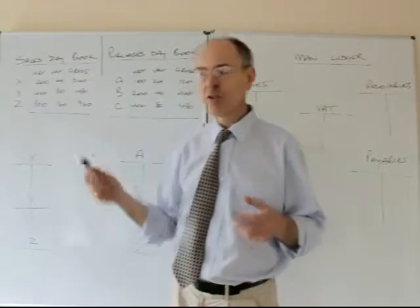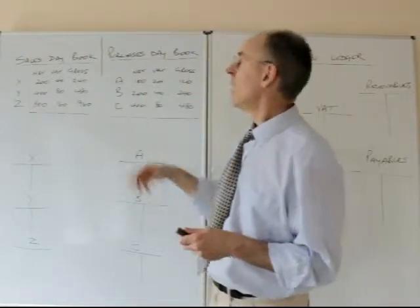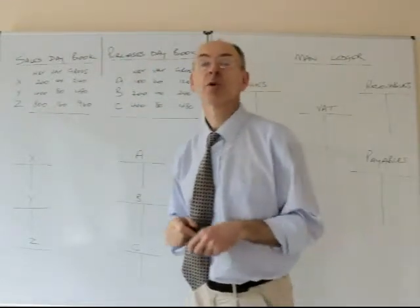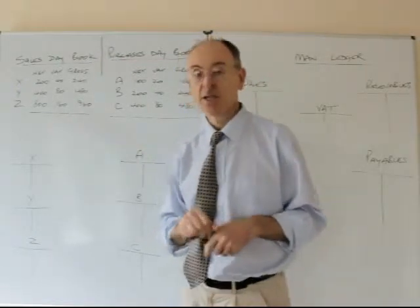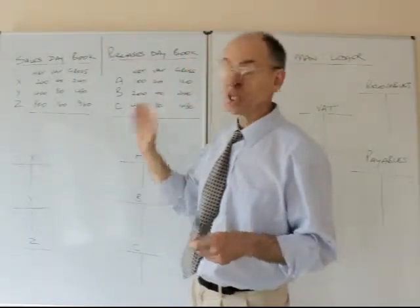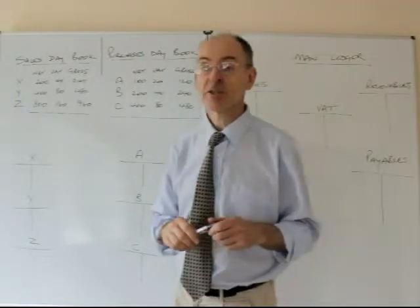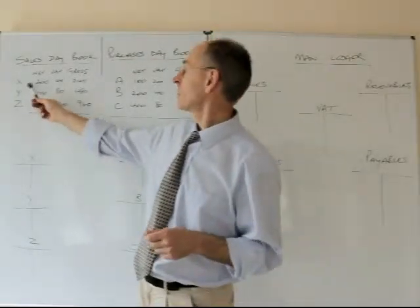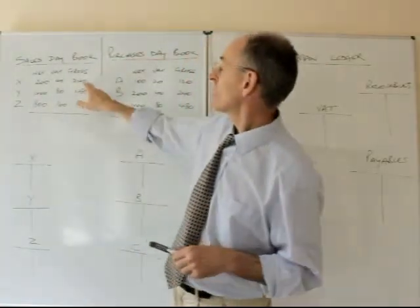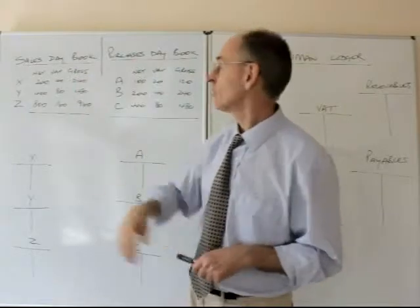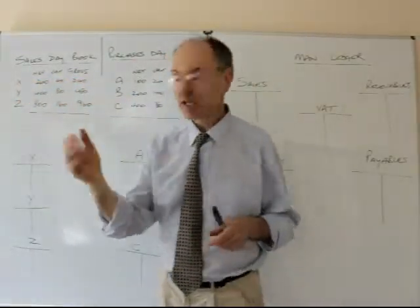The ledger system then. I've shown on the board something called a sales day book and something called a purchases day book. The point of the sales day book is to organize your invoices that you send to your credit customers. This is where receivable information is kept. We send an invoice out to customer X for £200 plus VAT, total amount he owes us is £240. So we make that entry in the day book and we send out the invoice.